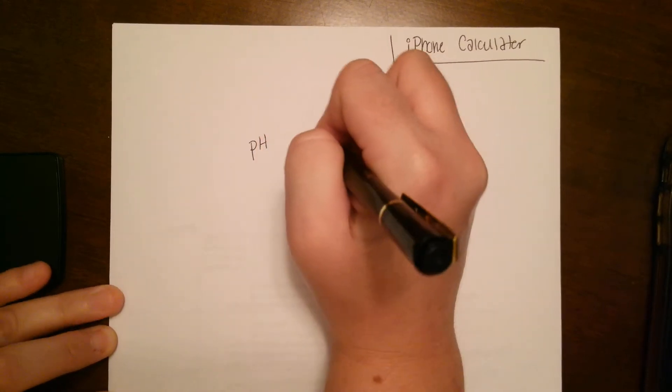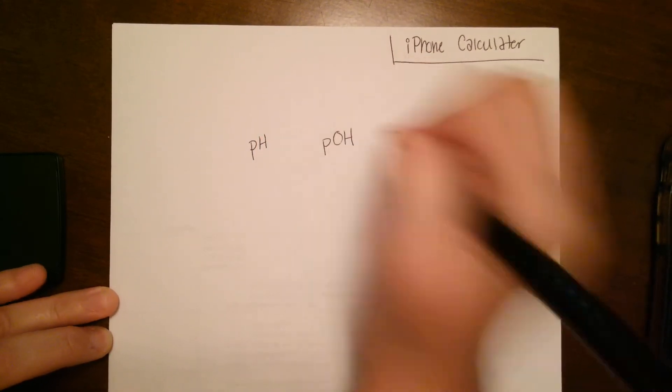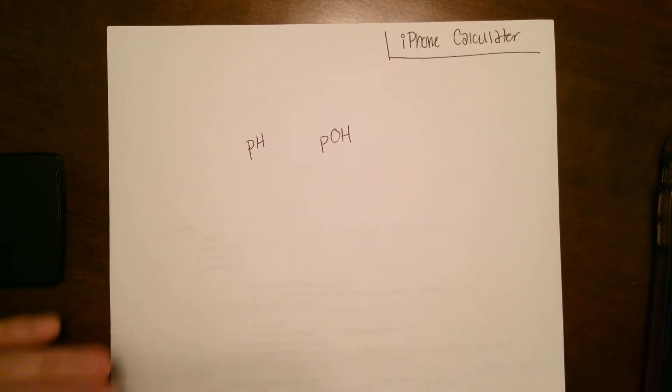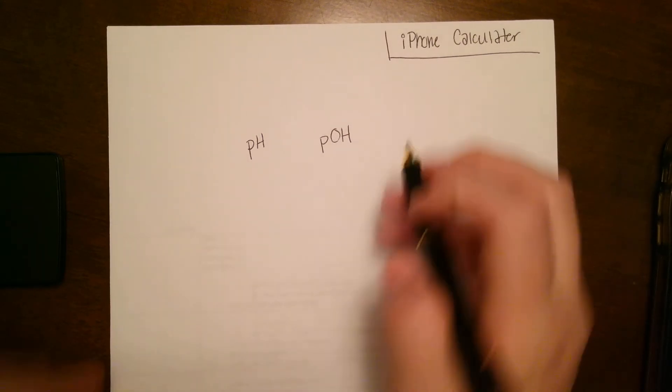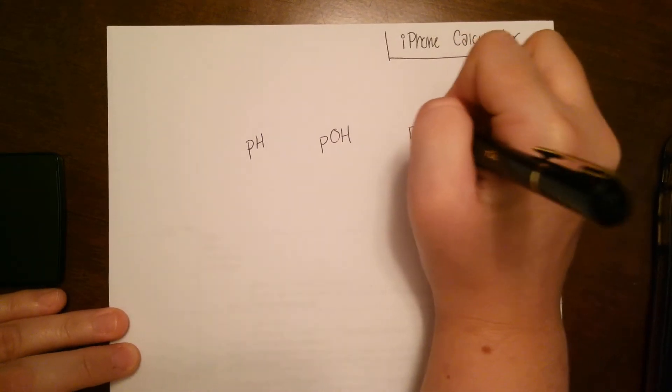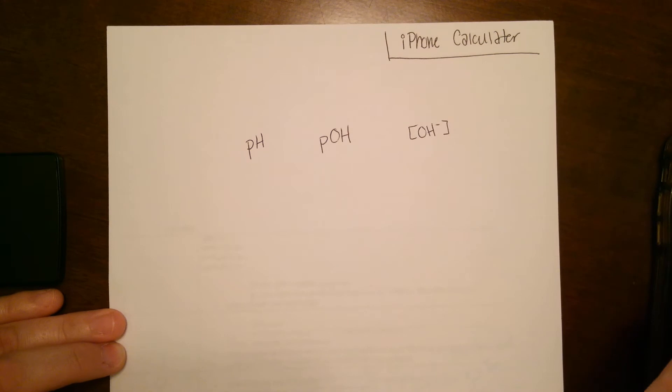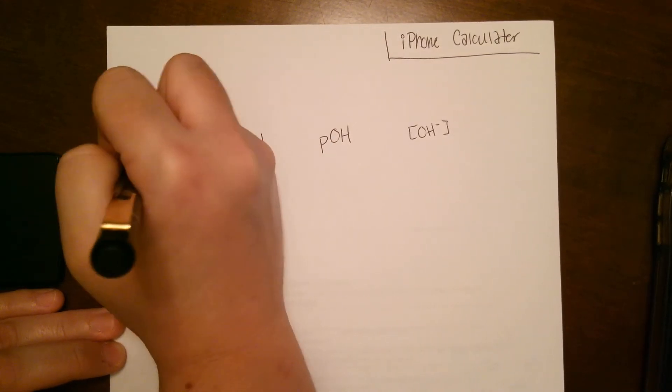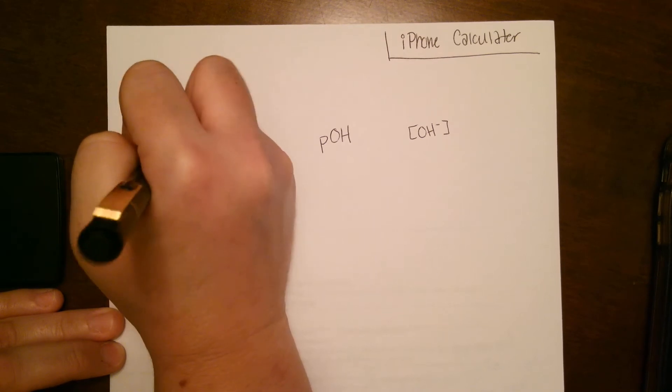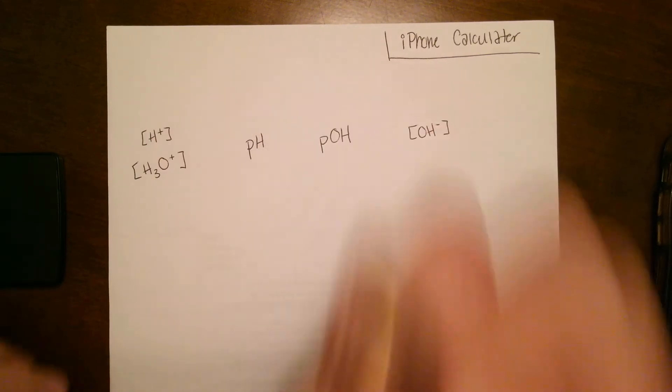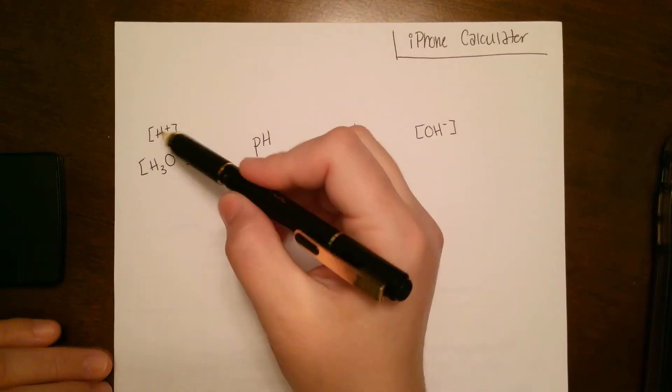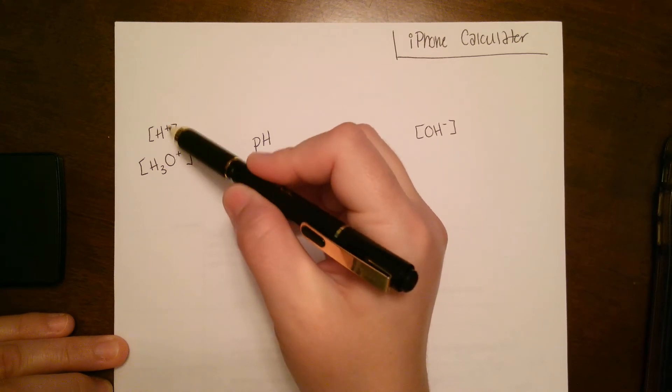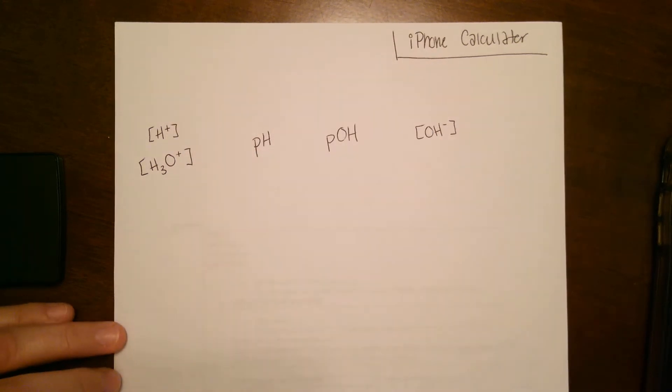So this week is talking about pH and pOH and their relationship, as well as the relationship between pOH and the hydroxide concentration, as well as the hydronium concentration. So hydronium, you're going to see two different ways. It could be H+ or H3O+, so make sure you're comfortable with that. You're going to see it both ways, so these are the same thing, just written different ways.